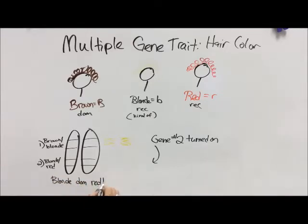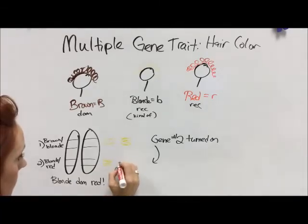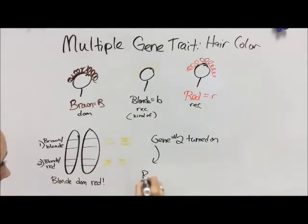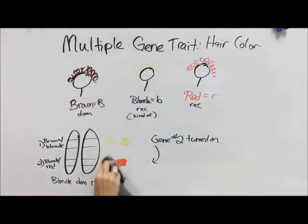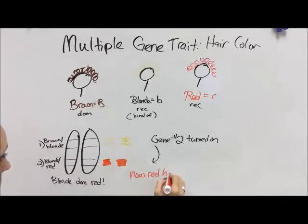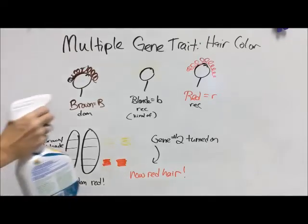Once gene two is turned on, it determines if you have blonde or red hair. On the second gene, a really peculiar thing happens where blonde is actually dominant to red. So we have a spectrum of dominance with hair color: brown is the strongest, blonde is second strongest, and then red. If you have one blonde on that gene or two blondes, then you have blonde hair, because red is super recessive. The only way to get red hair is to have two red alleles on that second gene, because you have to have two recessive alleles.